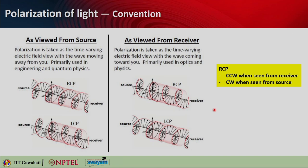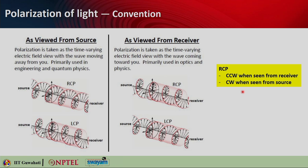There are different conventions people follow from book to book. One convention is: when seen from the receiver end (the wave is coming towards you), if you see counterclockwise rotation, you call it right circular polarization. When seen from the source (looking in the direction of wave propagation), you should see clockwise rotation of the electric field — that will be right circular polarization. You can obviously apply the same logic for left circular polarization.